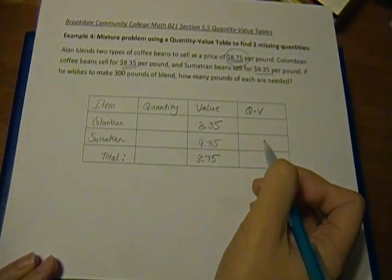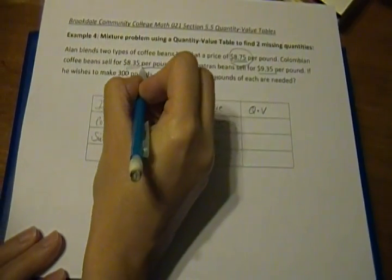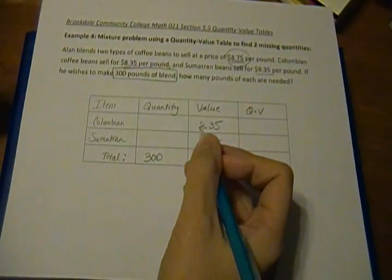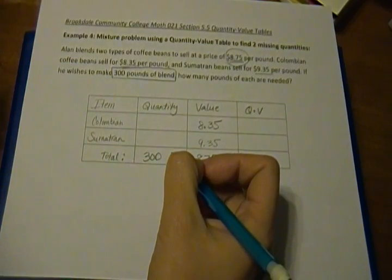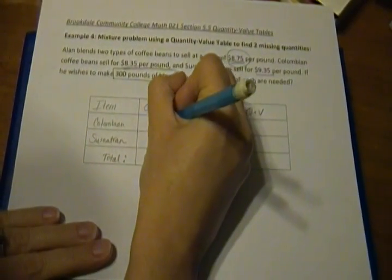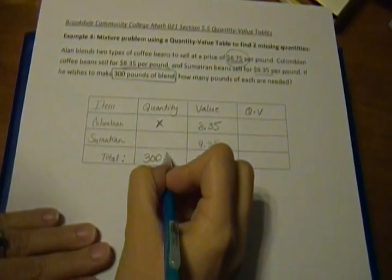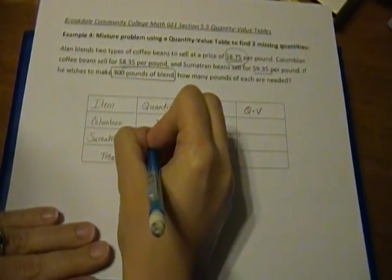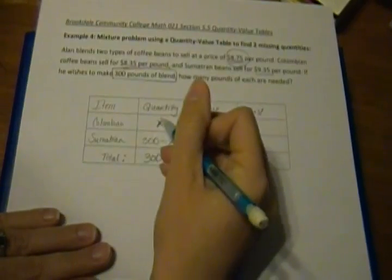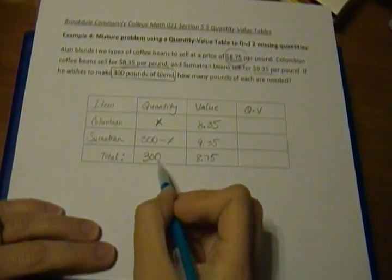So now our quantities. We know altogether that he wants to do 300 pounds of blend, so that means the total is going to be 300 pounds of coffee beans. And we have to figure out how many pounds of Colombian, how many pounds of Sumatran. So if we say that the Colombian is X, because we don't know what it is, the Sumatran is going to be our total quantity, which is 300, minus how much we have of the Colombian, which is X. So if you think about it, when you add 300 minus X plus X, the X's cancel out and you end up with just 300.